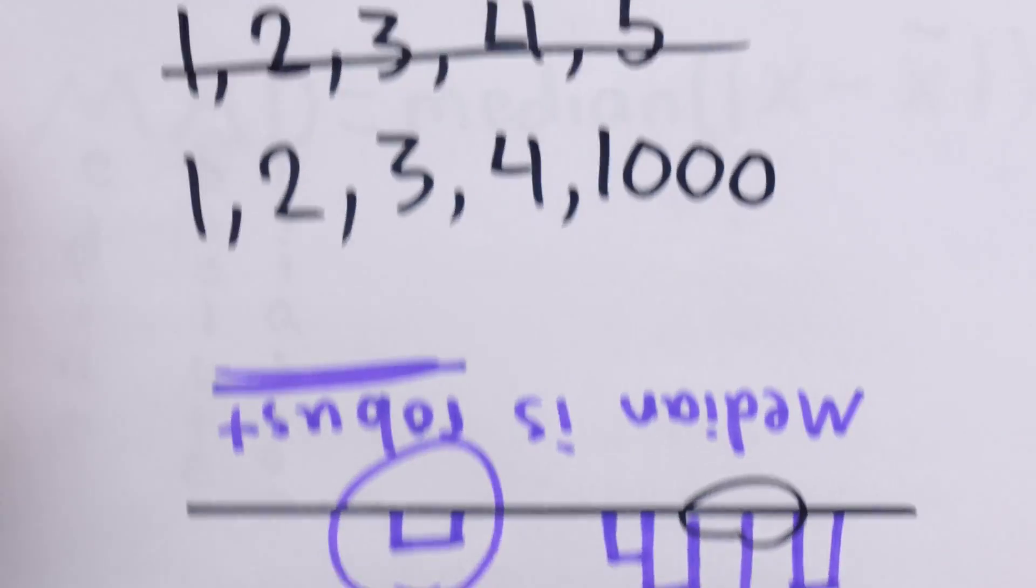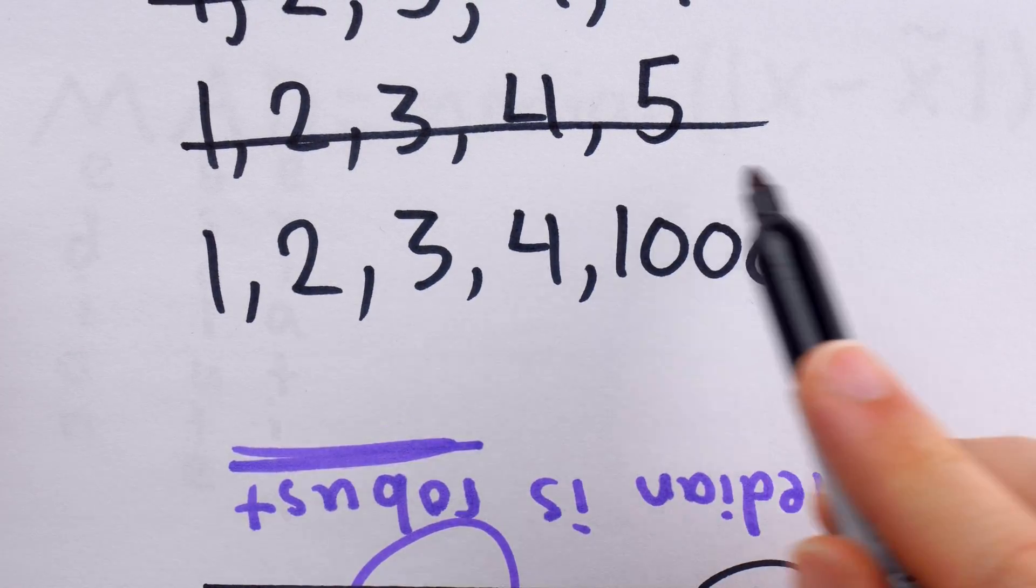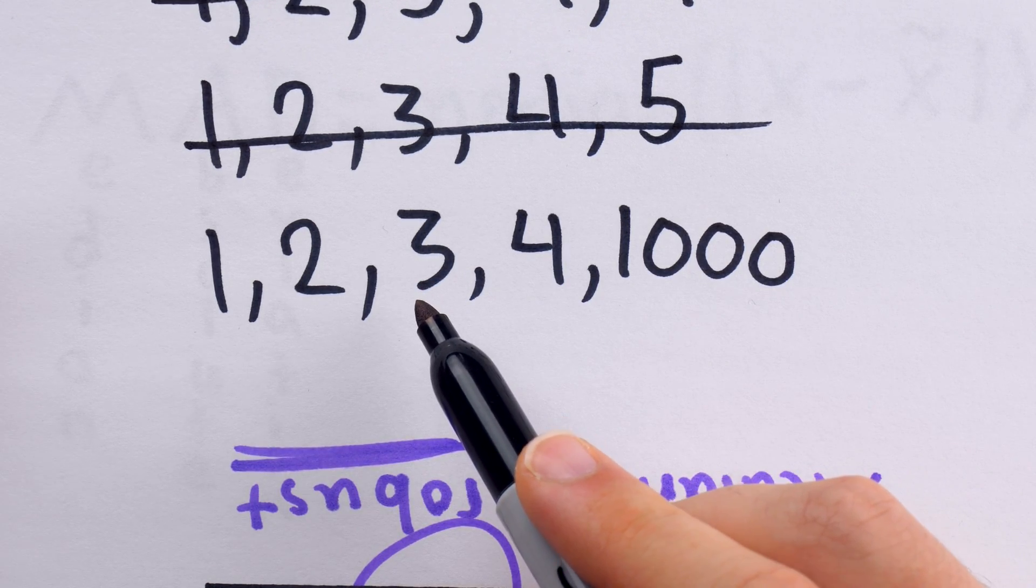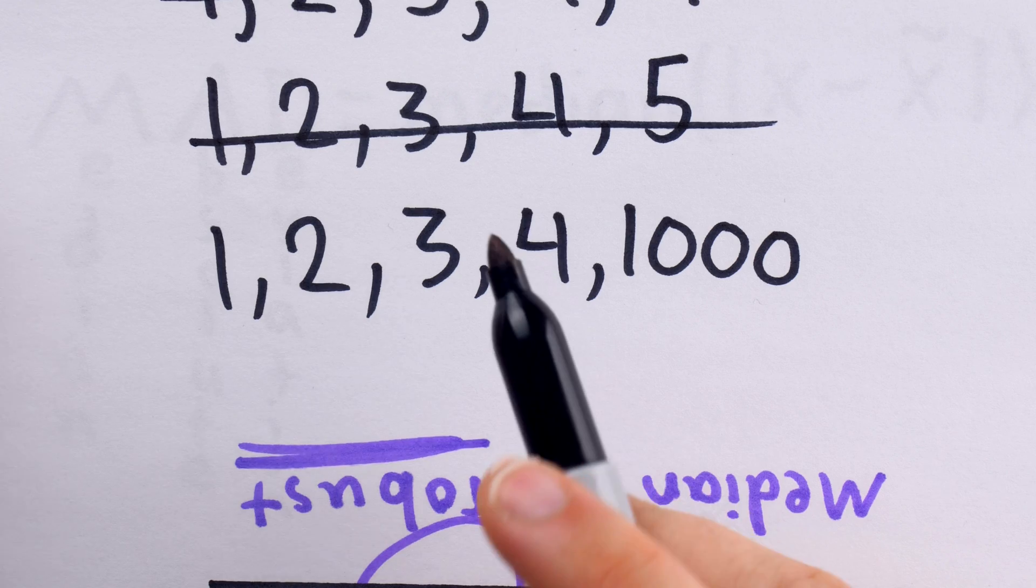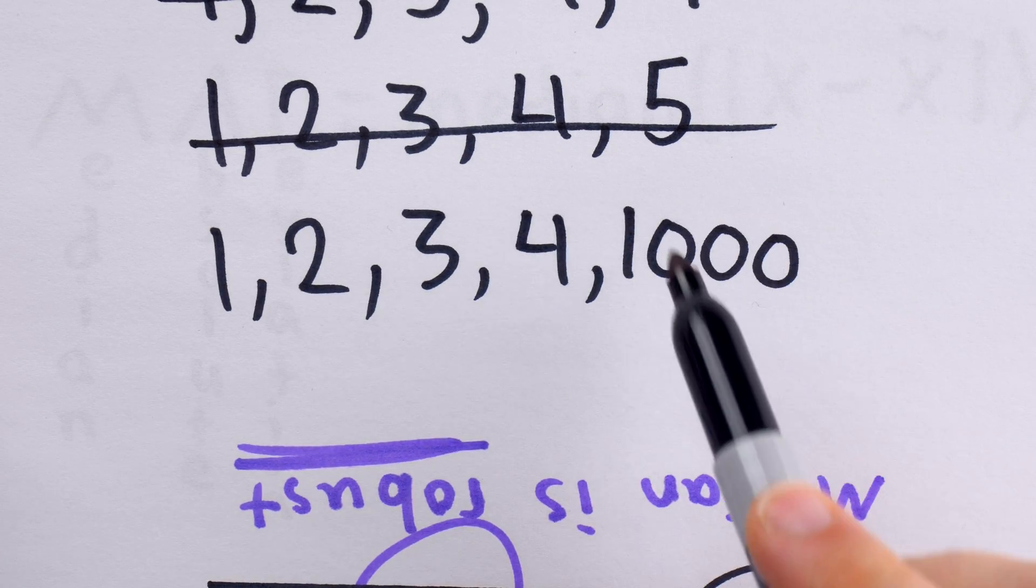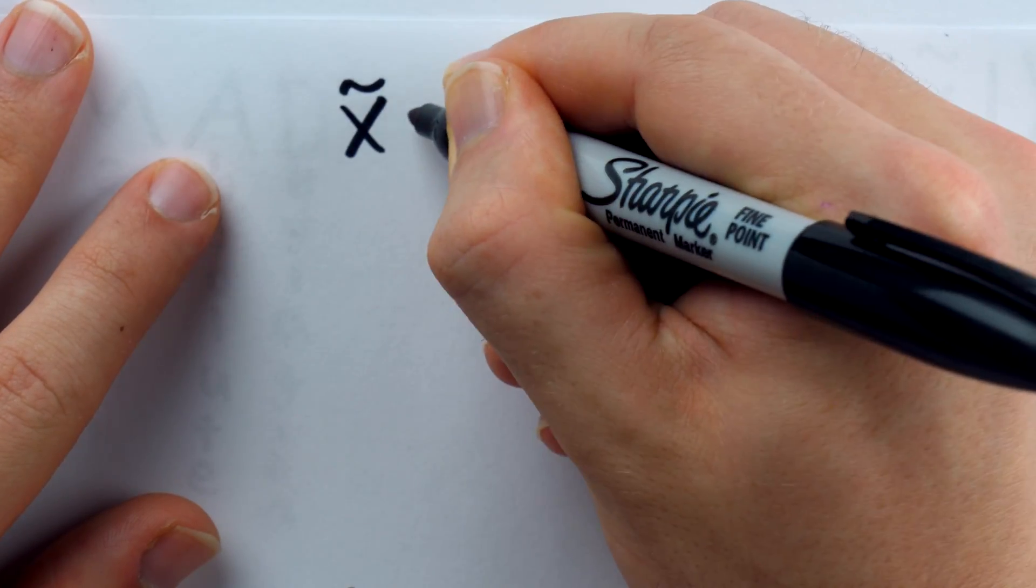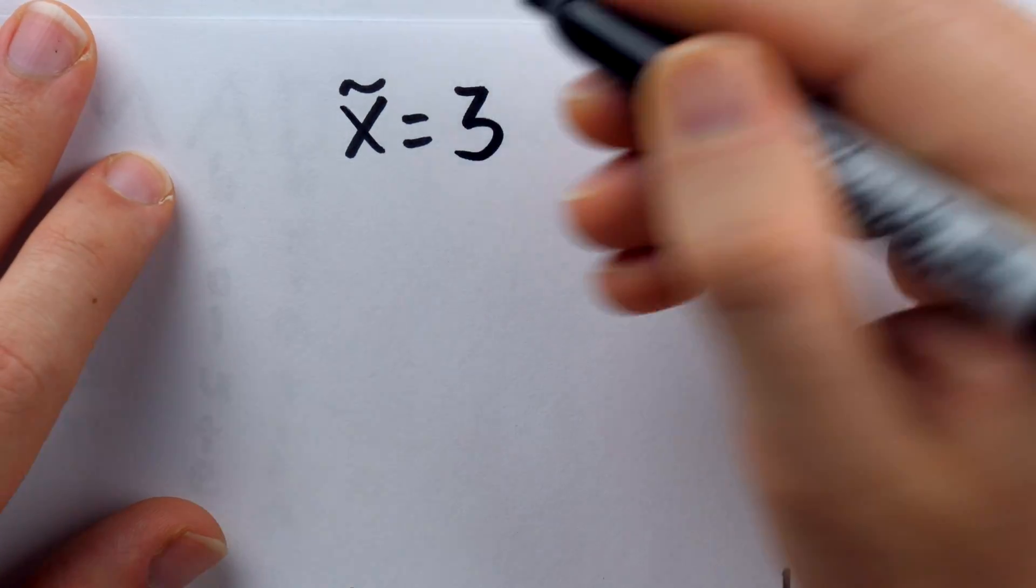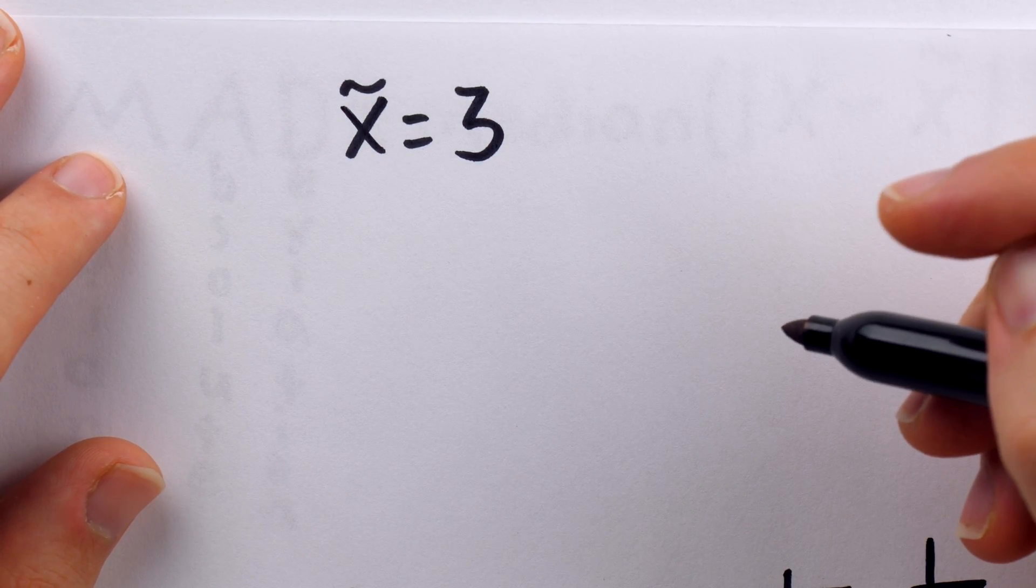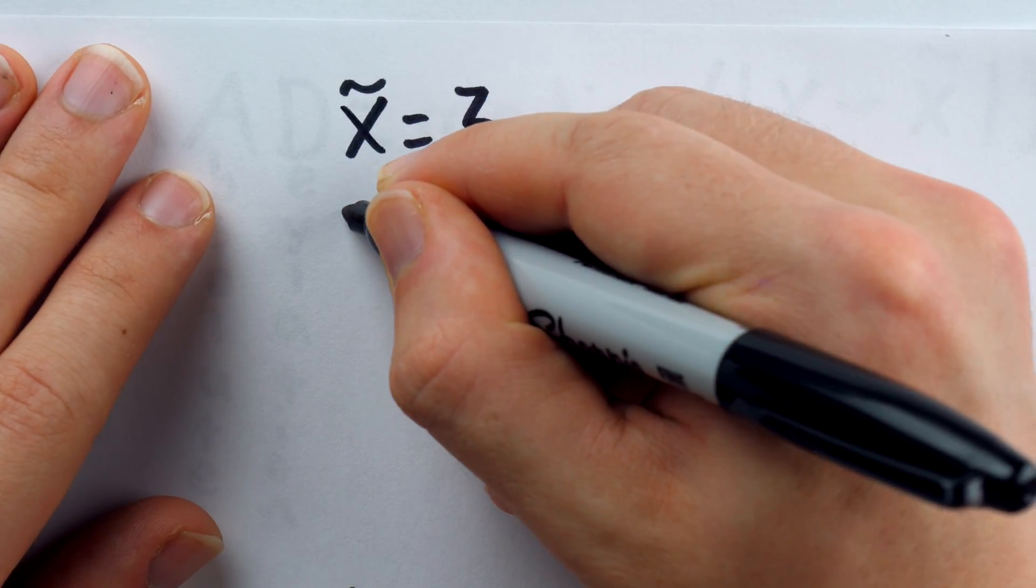So, if we come back to this data set, 1, 2, 3, 4, 1,000, 1,000 is obviously a huge outlier here, and it's very far away from the median. But, if we use the median absolute deviation to measure the spread, it shouldn't respond to the 1,000 too much. Let's try it. Remember, in that data set, our median was 3. So, we'll write x squiggly is 3.